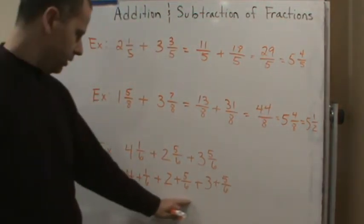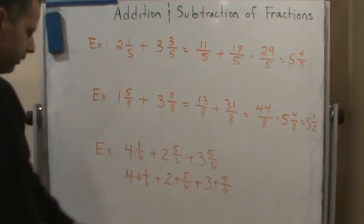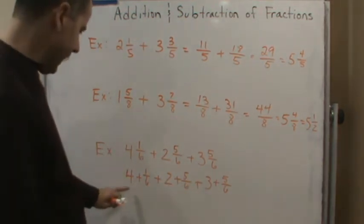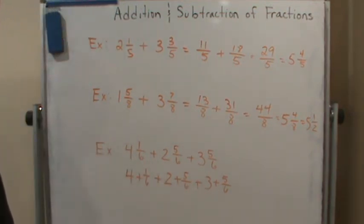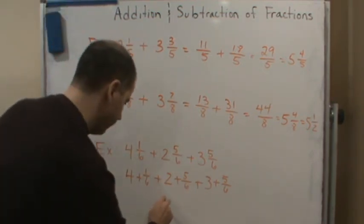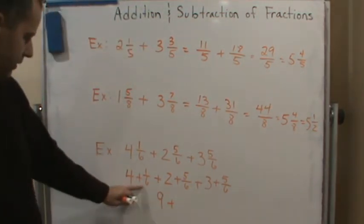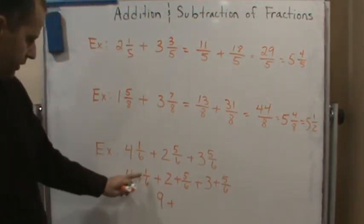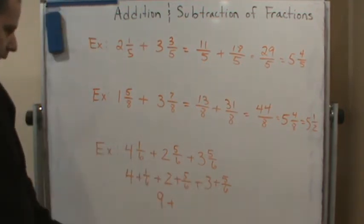Remember, addition is commutative, so I can move these around. I can add the 4, the 2, and the 3. Well, 4 and 2 and 3 gives me 9. And what do the fractions give me? This gives me 1/6 plus 5/6 plus 5/6, which gives me 11/6.